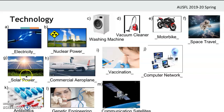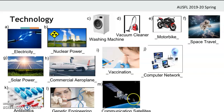And solar power — solar power is the energy that we get from the sun. Genetic engineering is the science of changing the structures of the genes or DNA. And communication satellites — they are objects in space and they are used to send out television and radio signals around the earth's surface.